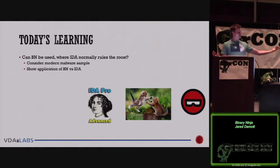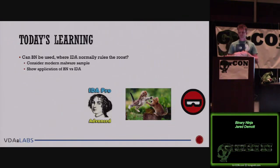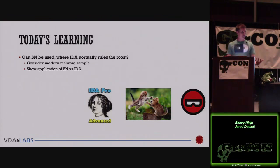Binary Ninja is a newer tool written by a friend of mine, Jordan Wines. He runs a company called Vector35 down in Melbourne, Florida, and they're doing some really cool stuff. Because they do a lot of vulnerability research, they decided to write their own tool — they wanted something faster, cheaper, and more flexible for the kind of work they do. When he told me about it I asked for a beta version to try out.